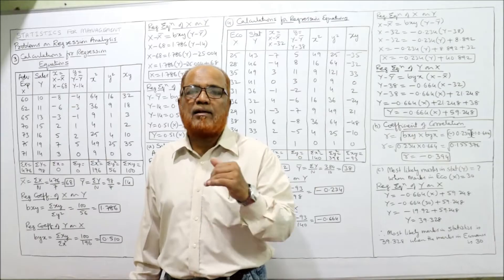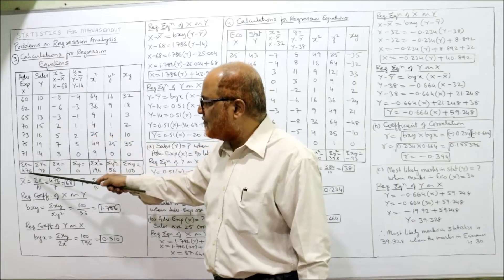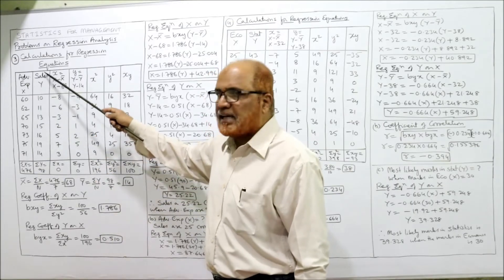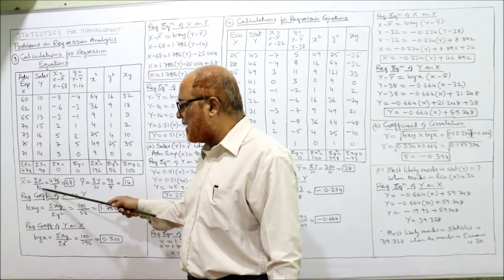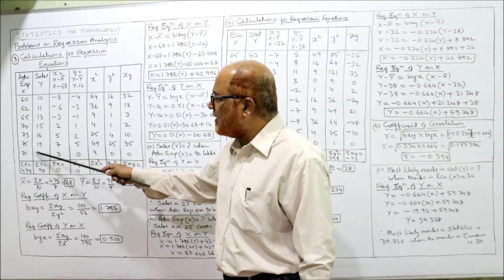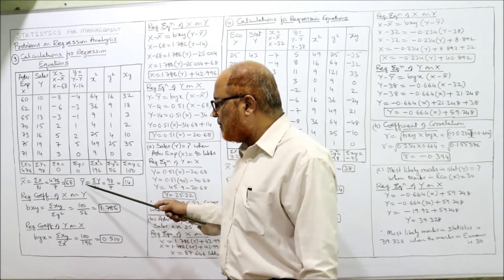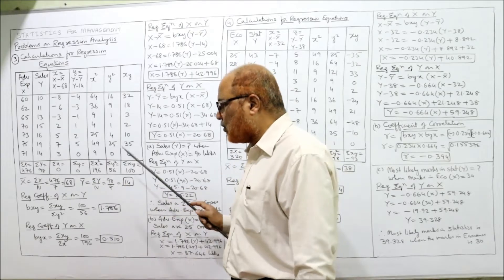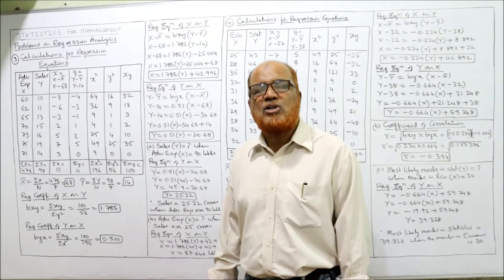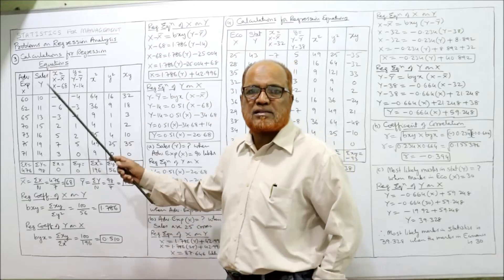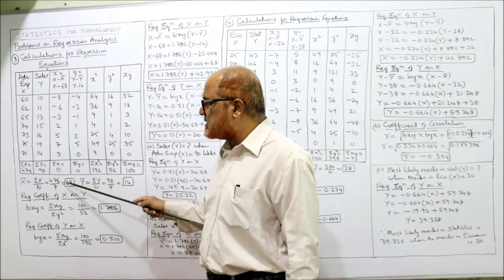First, calculate the mean values. The total of X (advertising expenditure) is 476 and the total of Y (sales) is 98. X bar equals summation X by N: 476 divided by 7 equals 68, a whole number. Y bar equals 98 divided by 7 equals 14, also a whole number. Since both means are whole numbers, we take deviations from the actual mean. Small x equals capital X minus X bar, i.e., capital X minus 68.